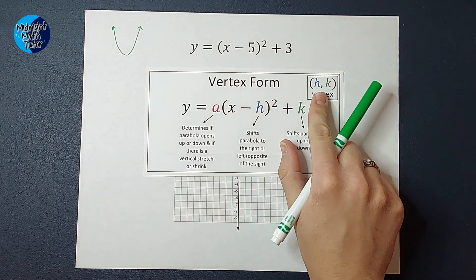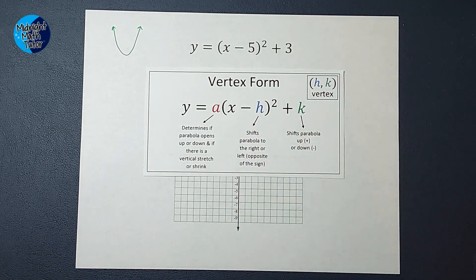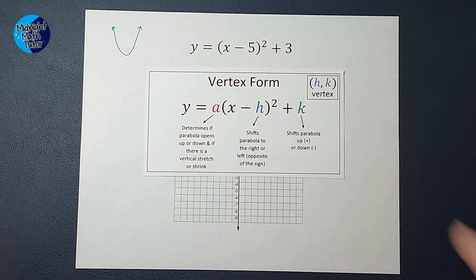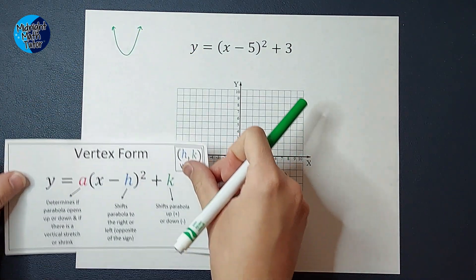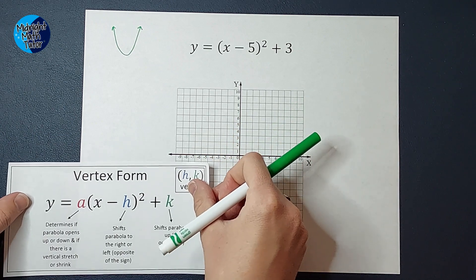Another way you can think of this is that the vertex is h, k. Either way you think of it, you're going to get the same thing. So let's go ahead and apply this. So I kind of want you to still be able to see that. There you go.